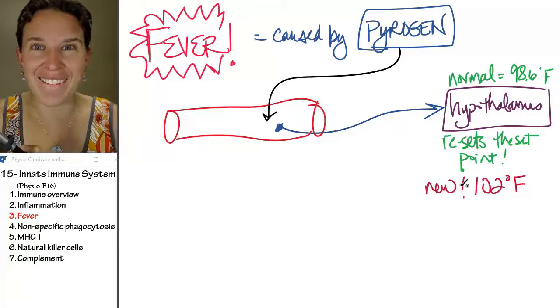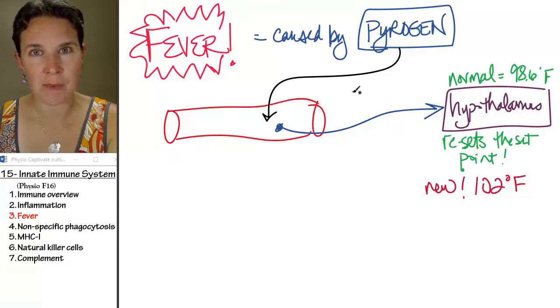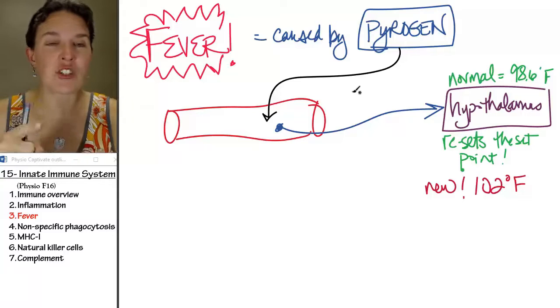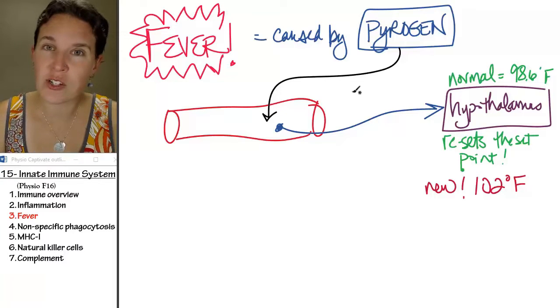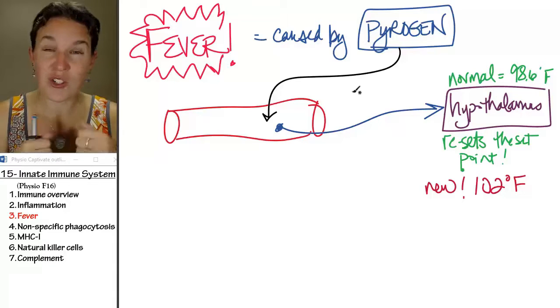So now, and why? Why did it do this? Because a pyrogen, a chemical came in and messed with that area of the hypothalamus. The hypothalamus now says 102 is normal. If your temperature is below 102, you respond like you're cold. You shiver.